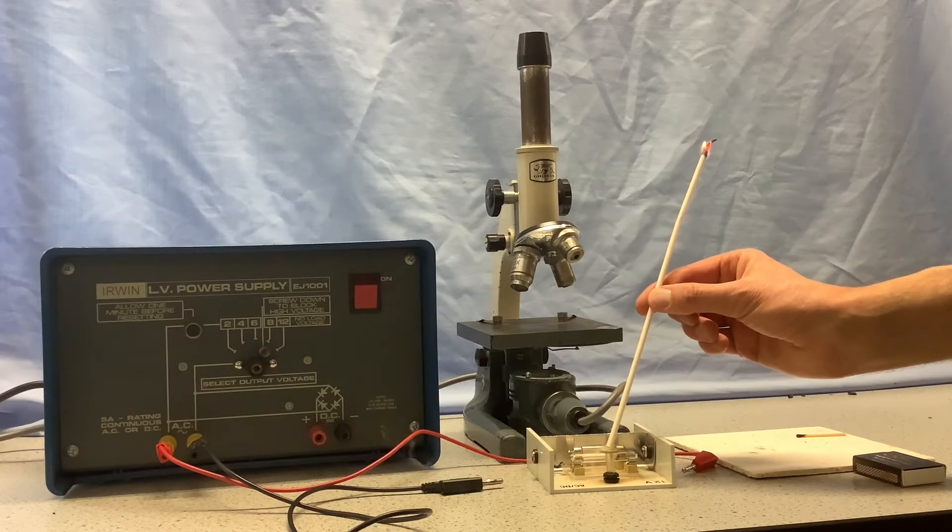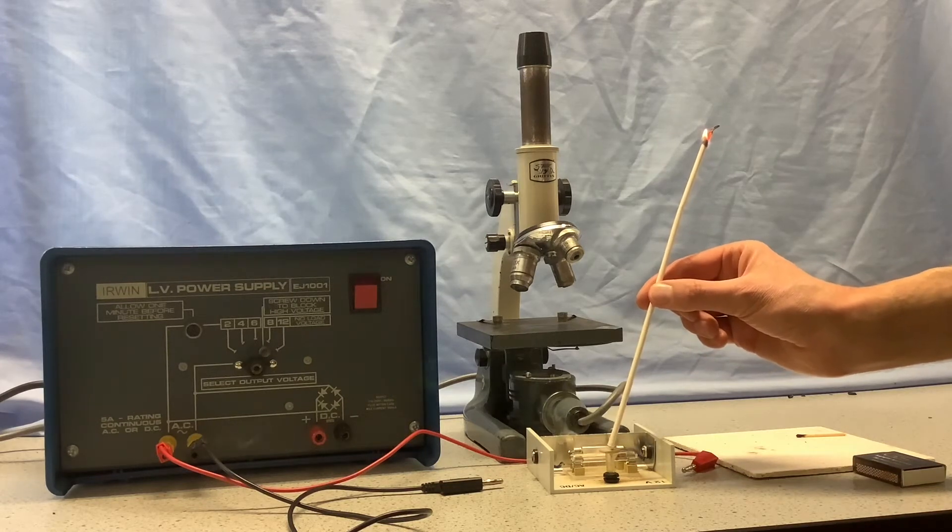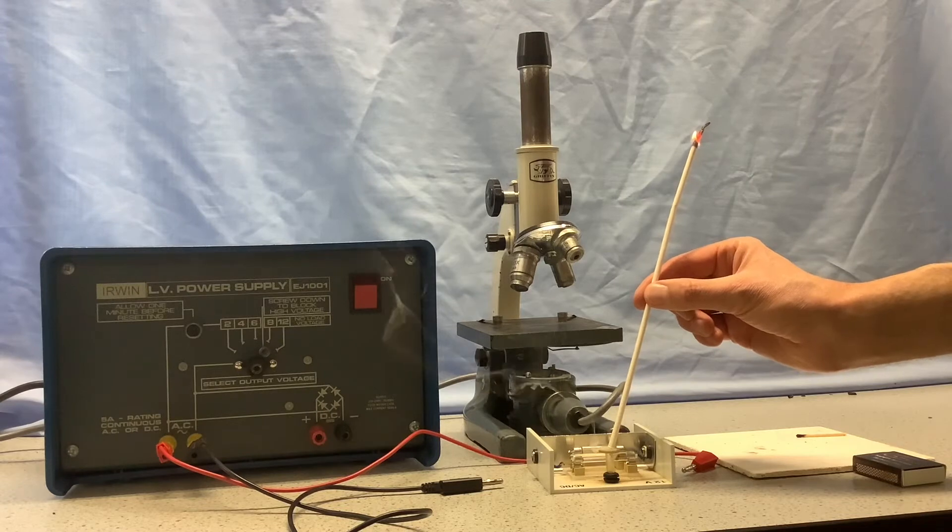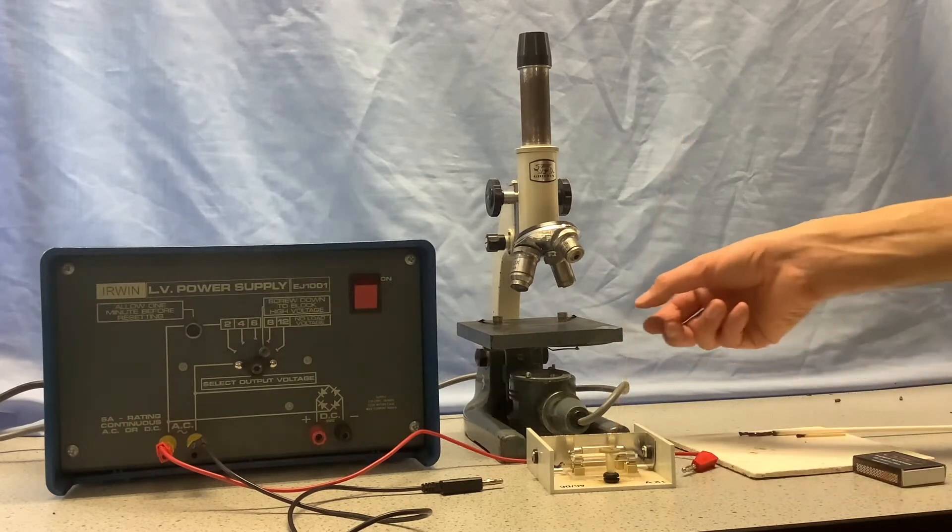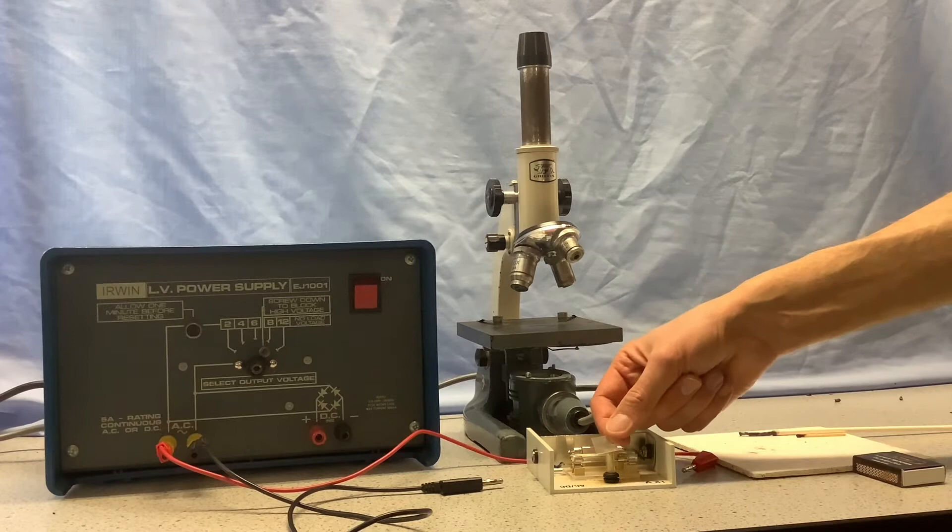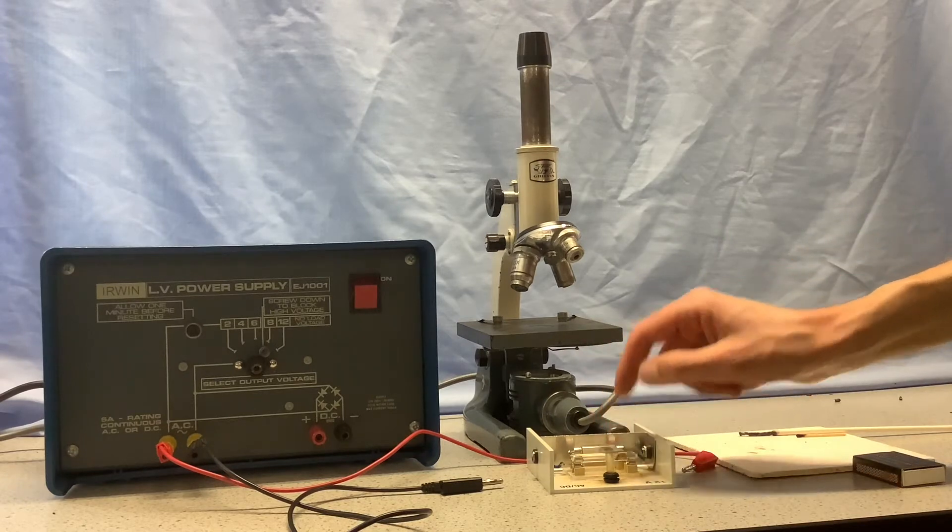We can pop that over the smoke cell and wait a bit of time for plenty of smoke to get in there. Then we can carefully put a cover slip over the top of the smoke cell to keep the smoke trapped in there.